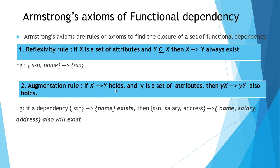The second rule is the augmentation rule. If x to y exists and gamma is a set of attributes, then gamma x to gamma y also will exist. If a functional dependency from x to y is already defined and we augment another set of attributes on both sides, we can define a new dependency gamma x to gamma y. For example, if SSN to name exists, we can define SSN salary address to name salary address.